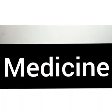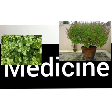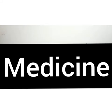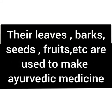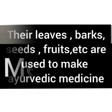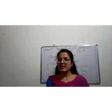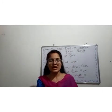Plants like tulsi, mint, neem, amla, and other herbs have medicinal properties. Their leaves, bark, seeds, and fruits are used to make Ayurvedic medicines. So students, these are the products obtained from trees and herbs.